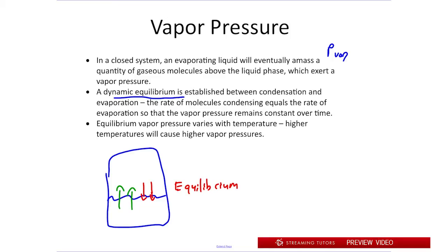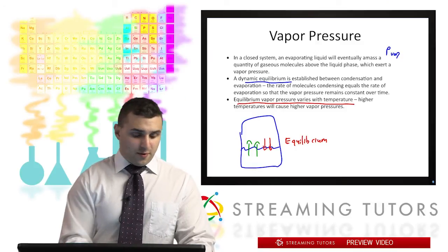And as we can imagine, the equilibrium vapor pressure is going to vary with temperature, for the same reasons that we said in the previous slide. So how do we actually measure vapor pressure? Well there's a useful way we can illustrate that.